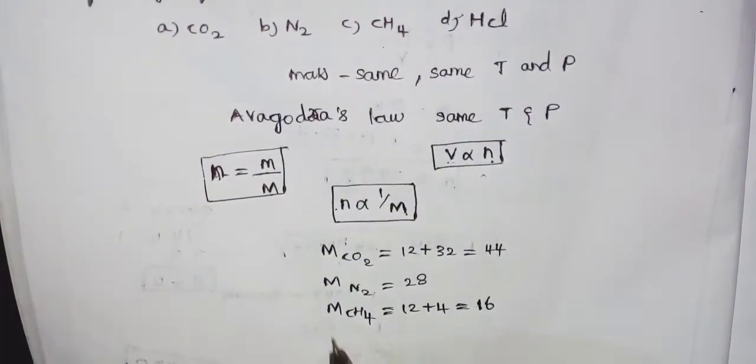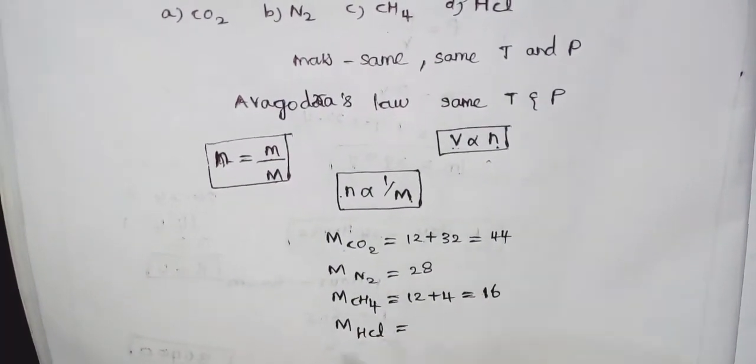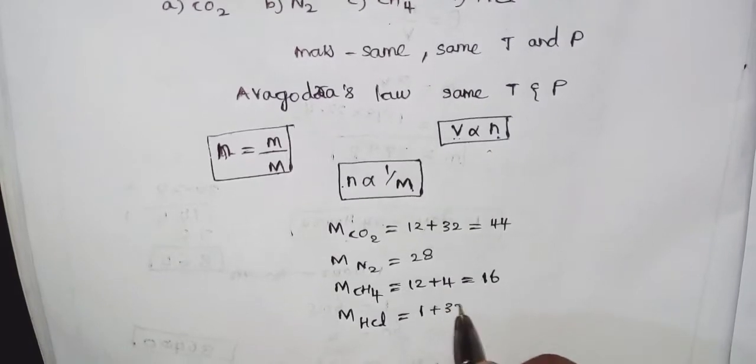Hydrochloric acid: hydrogen 1, chlorine 35.5, equals 36.5.